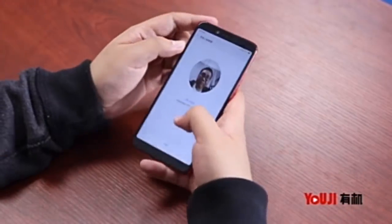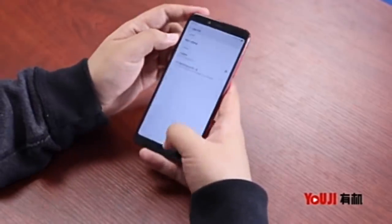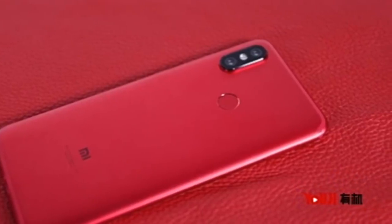There are two 64GB Mi 6X models with 4GB of RAM and 6GB of RAM. The 128GB model has 6GB of RAM.